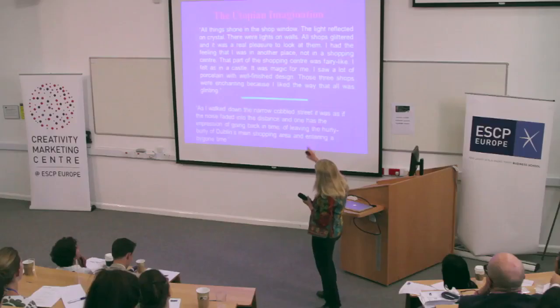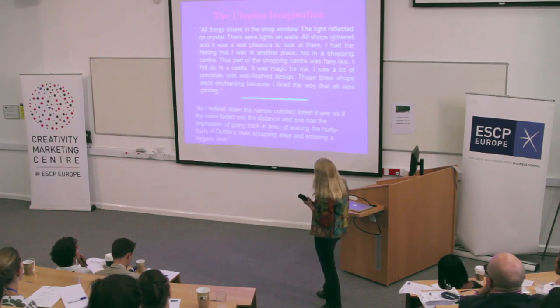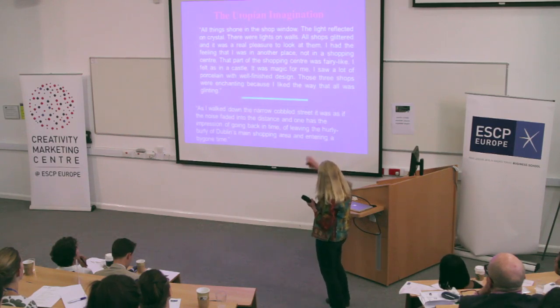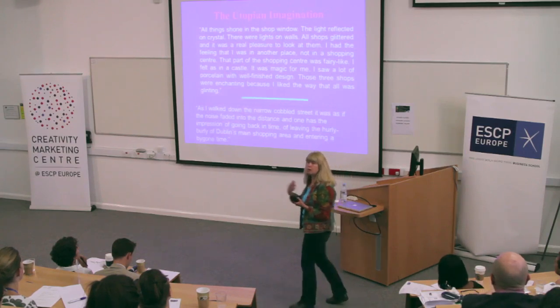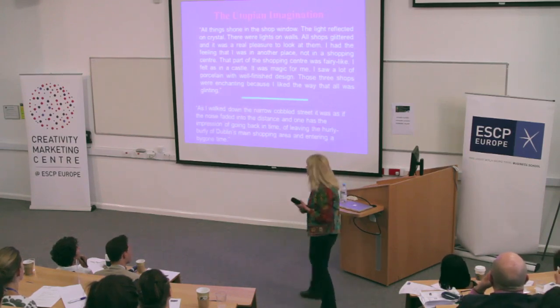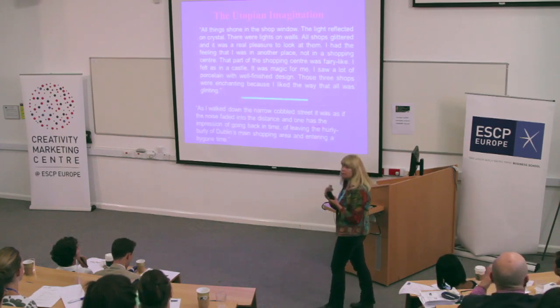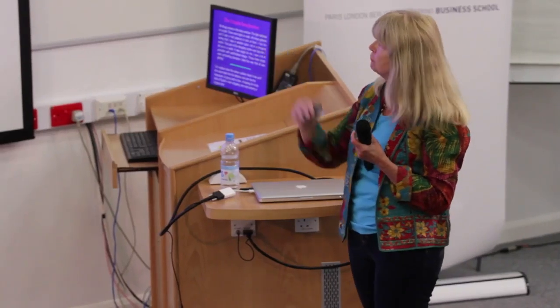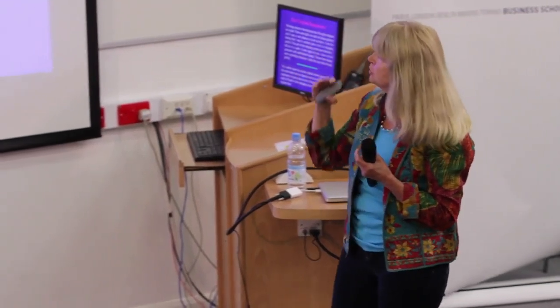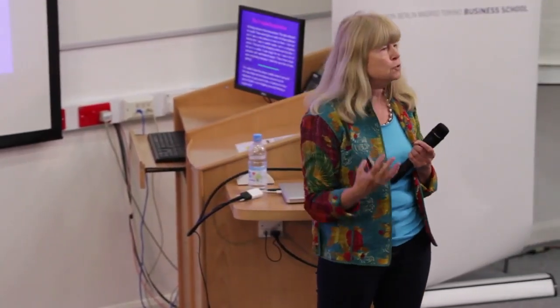You can see here one person is writing: 'All things shone in the shop window, the light reflected on crystal. There were lights on walls and shop and glittered, and it was a real pleasure to look at them. I had the feeling that I was in another place.' This sense of displacement was very crucial to the utopian imagination. 'That part of the shopping center was very like — I felt as in a castle. It was magic for me.' These were very rich descriptions that hadn't been coming out in the other methods.